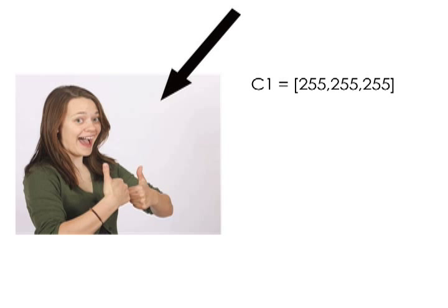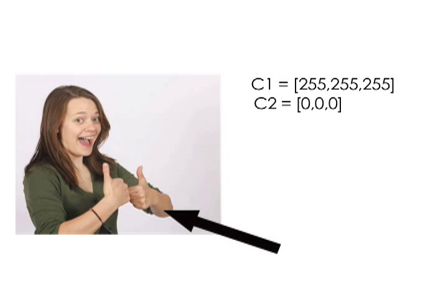Her clothes are a bit darker, so we'll set C2 equal to 0, 0, 0. And her skin tone is somewhere in between, so let's make it a general 100, 100, 100 value.